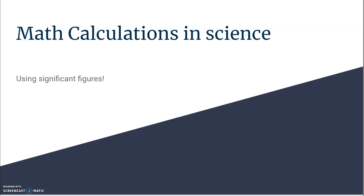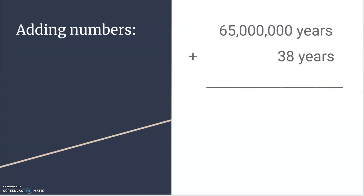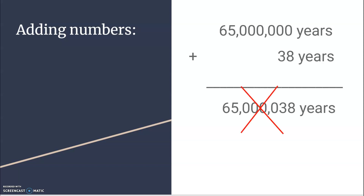Welcome, everyone. Today's lesson is on math calculations and science using significant figures. Let's take a problem. We're going to add these two numbers together: 65 million years plus 38 years. Pause the video and see what you get for an answer.